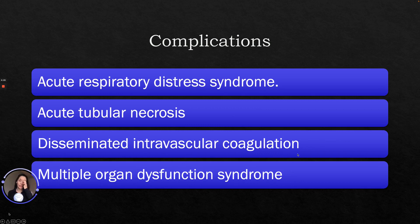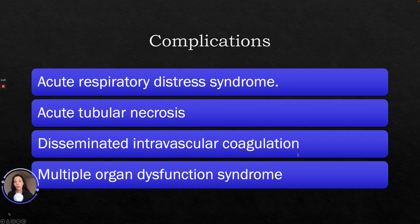There are different complications that can occur with hypovolemic shock. The first is acute respiratory distress syndrome, which occurs when fluid builds up in the tiny elastic air sacs in the lungs. You can also have acute tubular necrosis — a kidney disorder involving damage to the tubular cells of the kidney leading to acute kidney failure. You can have disseminated intravascular coagulation, characterized by widespread activation of the clotting cascade resulting in blood clots in tiny blood vessels. And multi-organ dysfunction syndrome is the end result.